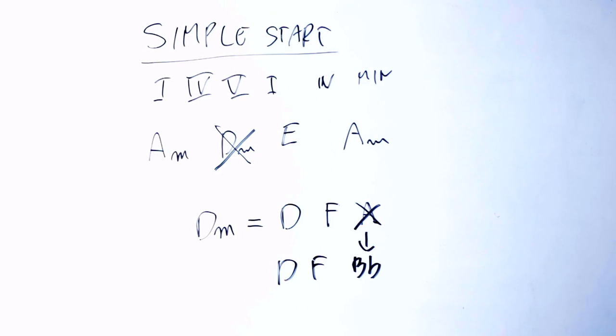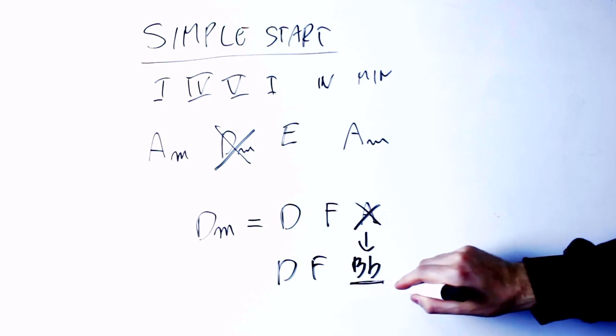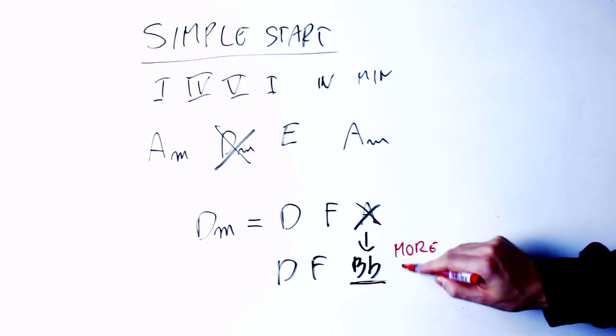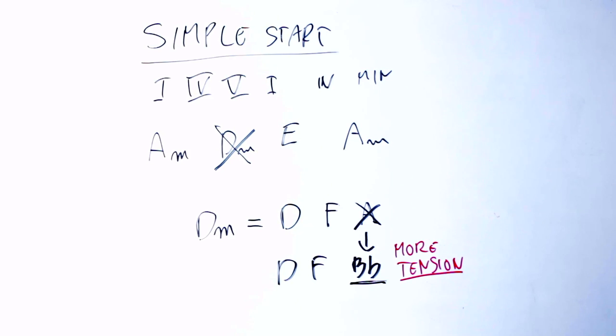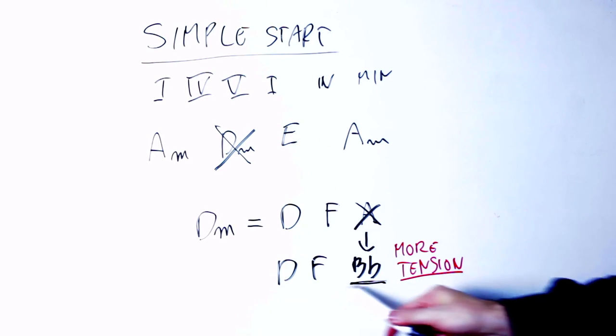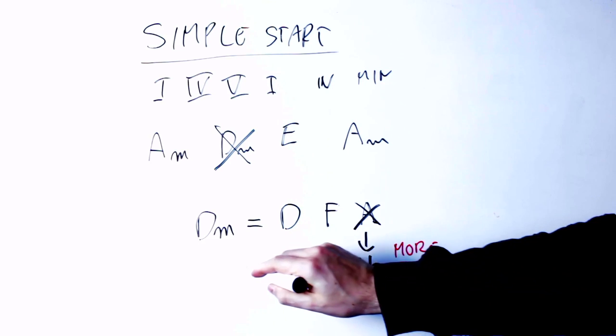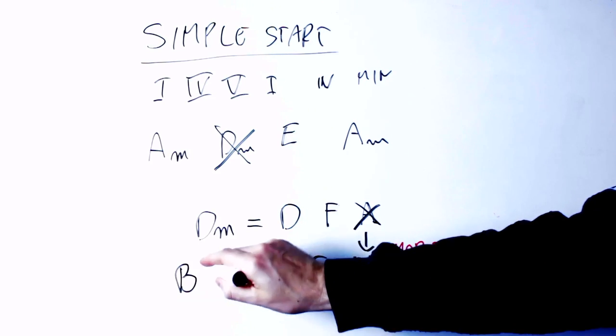As we can hear, this Bb gives substantially more tension to the chord and makes it more interesting. It still has the same harmonic meaning or if you want the same function of the previous chord, but it is more tense. Now, if we have a look at those three notes D, F, Bb, we see that this looks like a Bb major chord.